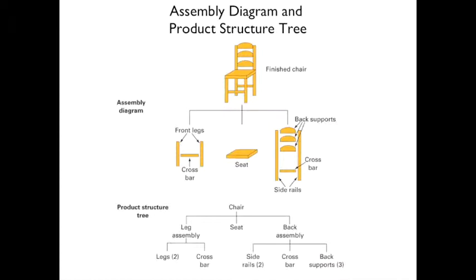Here's an example of a product structure tree. At the top you have a finished chair. The chair has front legs with a crossbar, a seat, and back legs or side rails with back supports and a crossbar. At the bottom of the tree you have two legs, a crossbar, two rails, a crossbar, and three back supports. You assemble these components together, forward them into the assembly of the chair, and you have a finished chair.